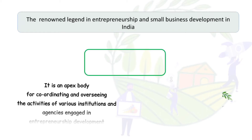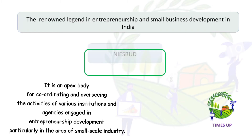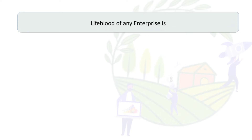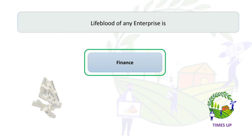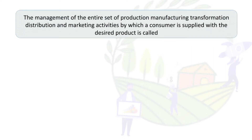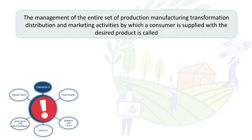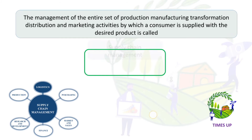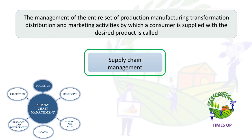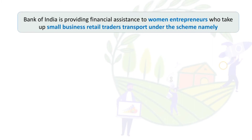The renowned legend in entrepreneurship and small business development in India is Nisberd. The management of the entire set of production, manufacturing, transformation, distribution, and marketing activities by which a consumer is supplied with the desired product is called supply chain management.